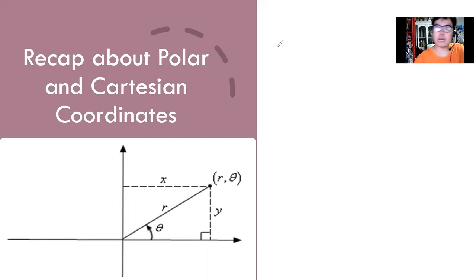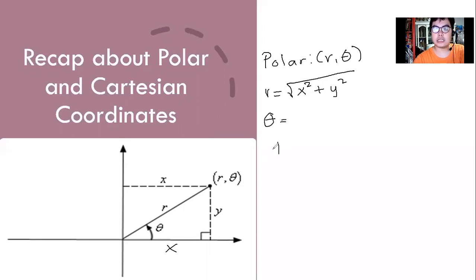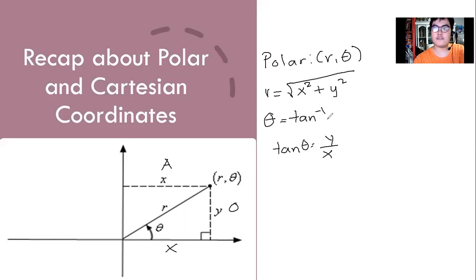We're going to have a short review about polar and Cartesian coordinates. When we say polar, the coordinates are r and theta. Now given y and x as the legs of the triangle, we're going to look for r using the Pythagorean theorem — we square the legs, namely x and y, find the sum, then take the square root. For theta, remember that tangent theta equals y over x, because opposite over adjacent — y is the opposite and x is the adjacent. So to find theta, we use the inverse tangent of y over x. That's how we find the polar coordinates.